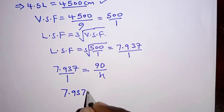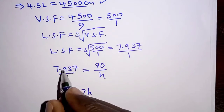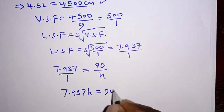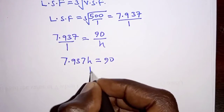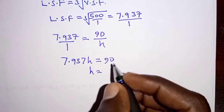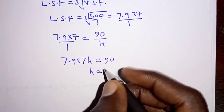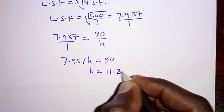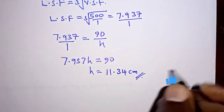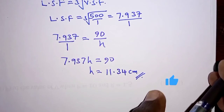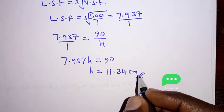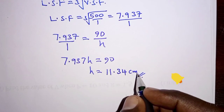Cross-multiplying, we get 7.937 × h = 1 × 90. Dividing both sides by 7.937, the height of the similar container becomes 11.34 centimeters. That is the height of the similar container. With that we mark the end of this problem — thank you for watching, bye.